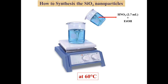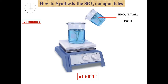Then, another solution including 2.7 ml of nitric acid is added to ethanol. This solution is added drop-wise to the first solution, and the combined solution is stirred for about 2 hours at a temperature of 60°C.